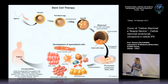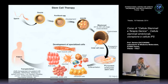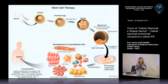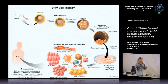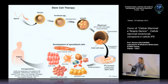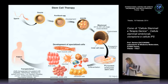Portando avanti l'embriogenesi in vitro fino allo stadio di blastocisti tardiva, prima dell'impianto, è possibile prelevare la massa cellulare interna, mettere le cellule in coltura: queste proliferano, mantengono la pluripotenza e un cariotipo normale, e possono essere indotte a differenziarsi in cellule del cuore, della pelle, del midollo osseo, del sangue, in neuroni. Oggi cominciamo a capire i segnali di differenziamento che guidano verso un tipo cellulare piuttosto che un altro, aprendo la strada alla terapia cellulare.